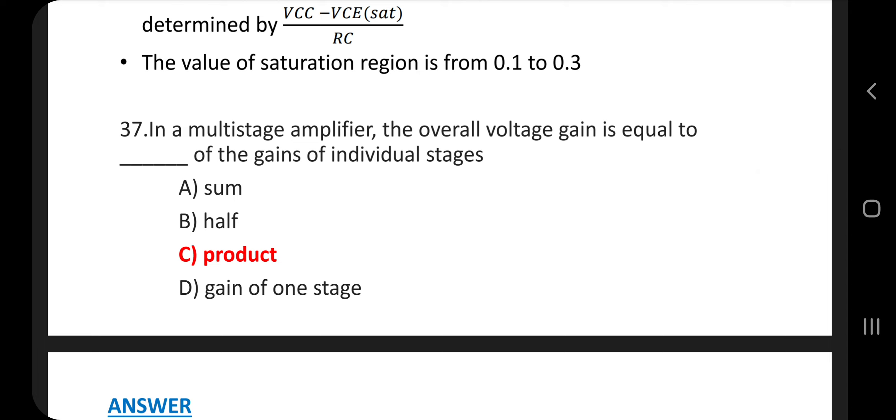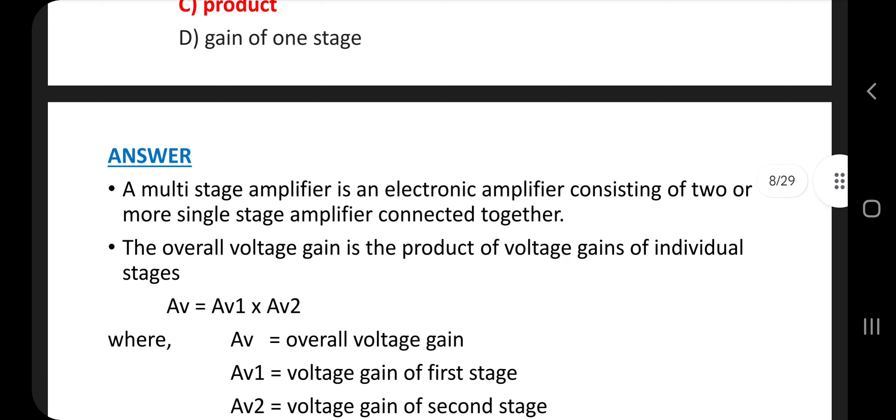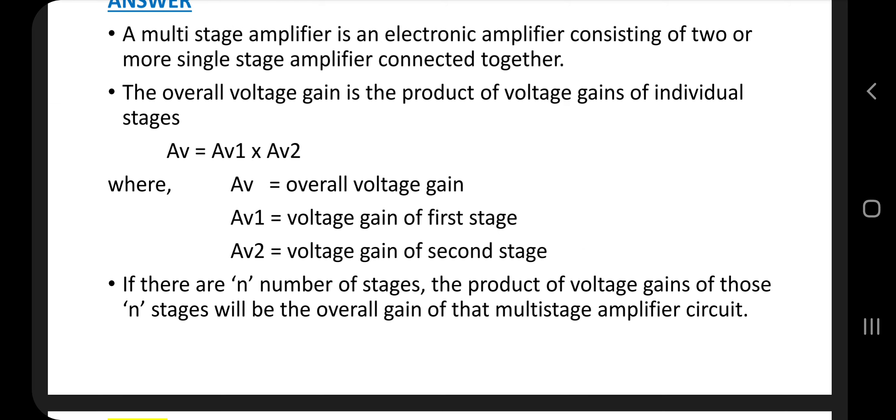Question 37. In a multi-stage amplifier, the overall voltage gain is equal to dash of the gain of individual stages. Answer is option C, product. A multi-stage amplifier is an electronic amplifier consisting of two or more single-stage amplifiers connected together. The overall voltage gain is the product of voltage gains of individual stages. AV equal to AV1 into AV2. If there are N number of stages, the product of voltage gains of those N stages will be the overall gain of the multi-stage amplifier circuit.